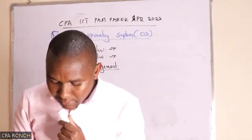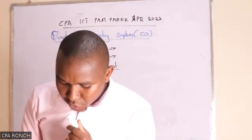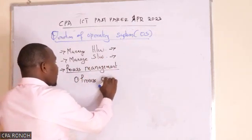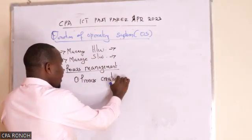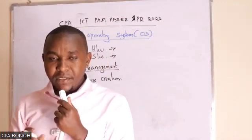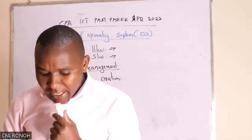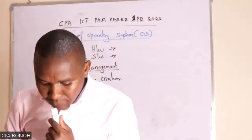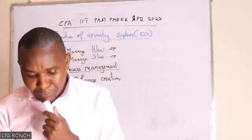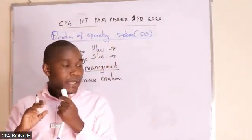The first one is process creation. You can explain and say that the operating system is responsible for creating new processes when a program or application is launched.